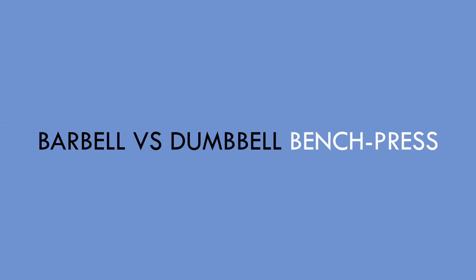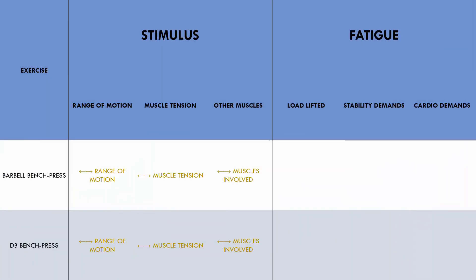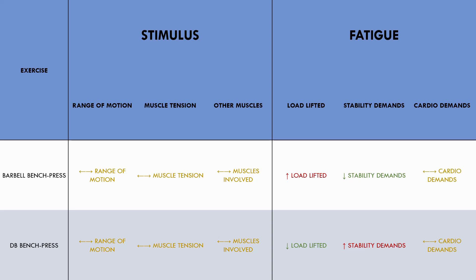The last two exercises we will compare are the barbell and dumbbell bench press for the pecs. Both exercises involve a very similar range of motion, muscle tension, and involvement of other muscle groups. The dumbbell press may have a slightly greater range of motion depending on how it is performed, although it is not significant. Therefore, they are probably roughly equally as stimulative for the chest. In terms of fatigue, the load lifted will be greater for the barbell press, although the stability demands are slightly greater for the dumbbell press as they are free to move in more dimensions. Both exercises have low cardiovascular demands, making both overall quite low in terms of fatigue. So the barbell and dumbbell bench press don't have any significant advantages over one another and are probably roughly as effective as each other for chest muscle growth.